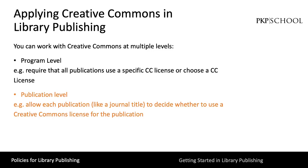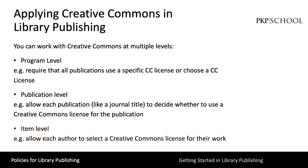At the publication level, a particular publication may require or prefer a Creative Commons license. If use of Creative Commons is being decided at this level, you should work with all responsible parties to choose the appropriate license. Finally, at the item level, each author that publishes an article in a library-hosted journal will be given the opportunity to choose a Creative Commons license. If authors are empowered to select a license for their work, you should make sure that they are being provided with the information they need to make an informed decision.